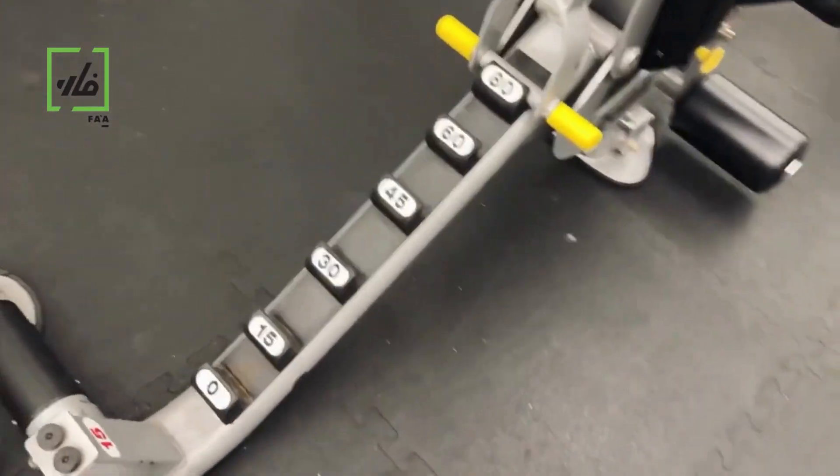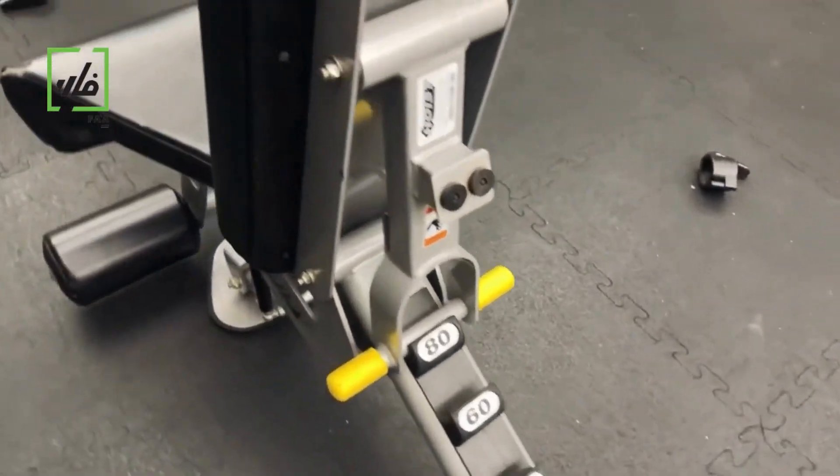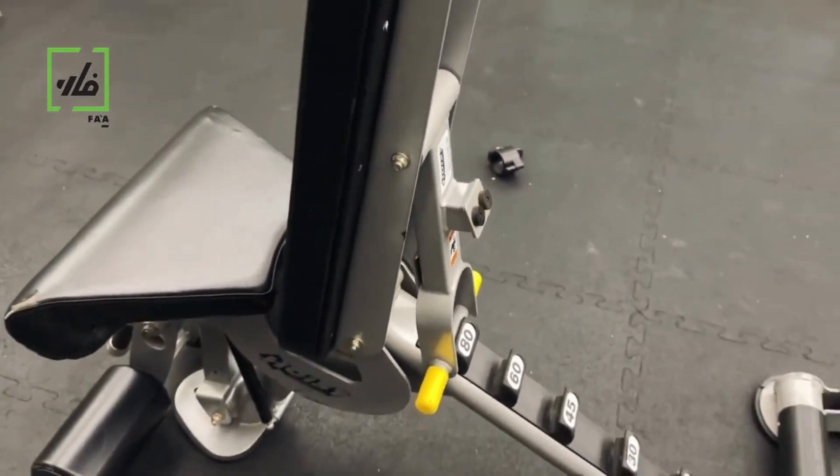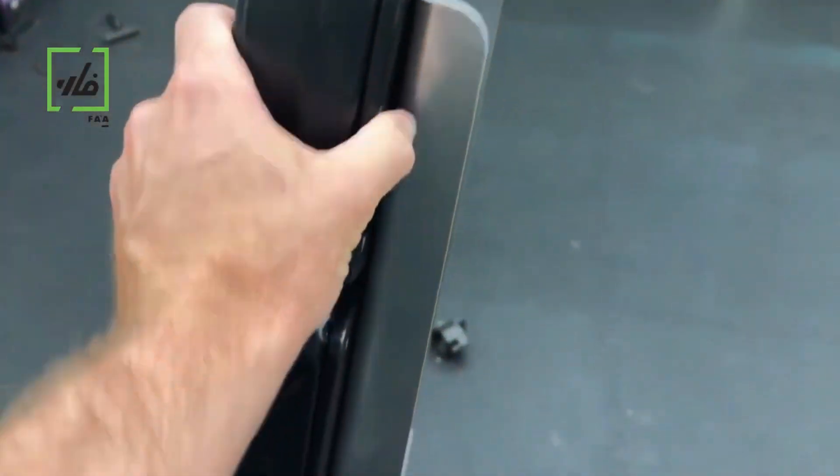This is a seven position multi-adjustable weight bench. As you can see here, we have positions from 80 degrees all the way down to negative 20 degrees for decline.